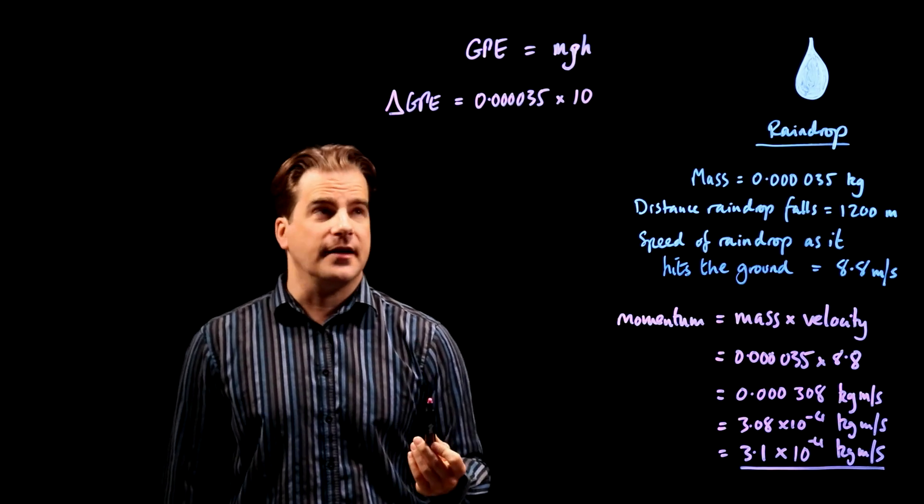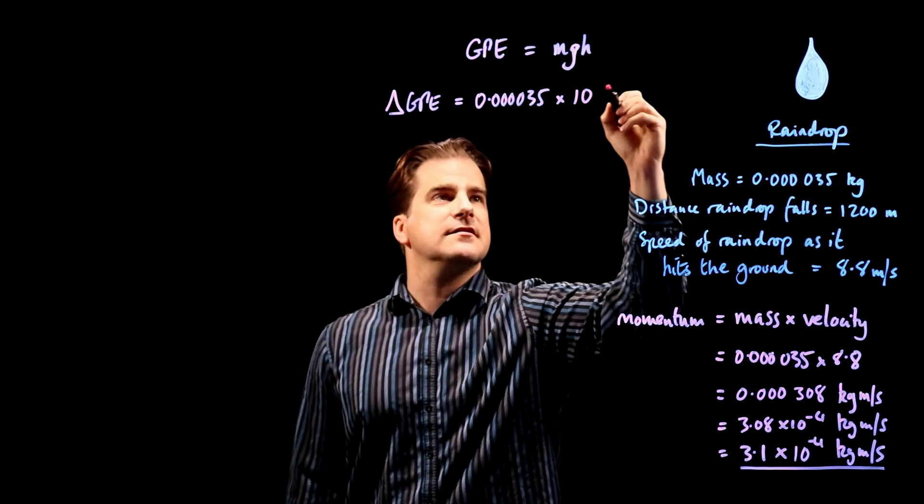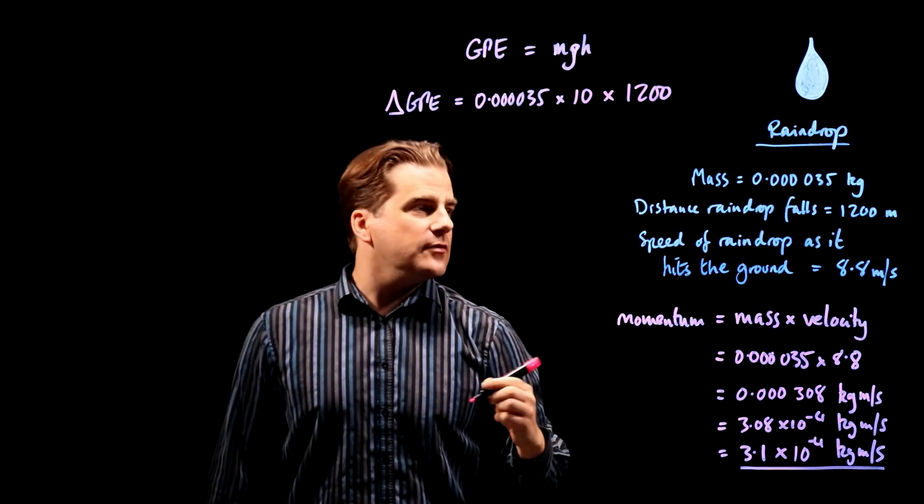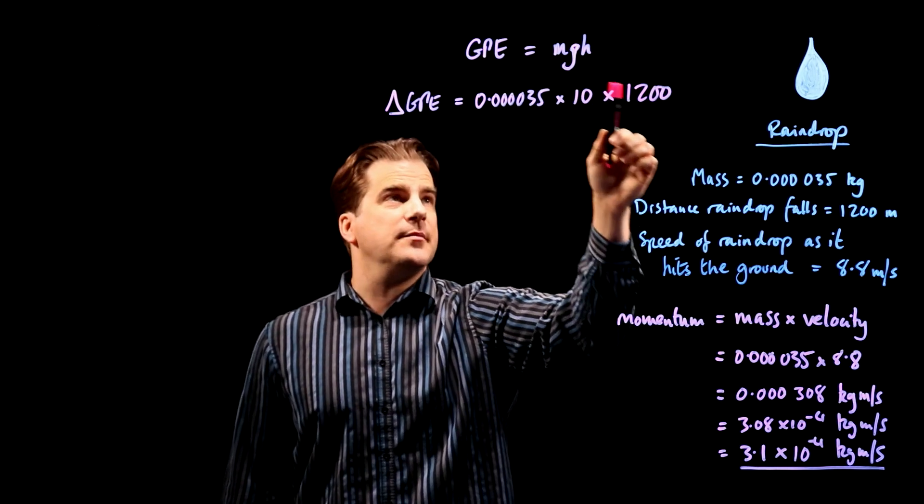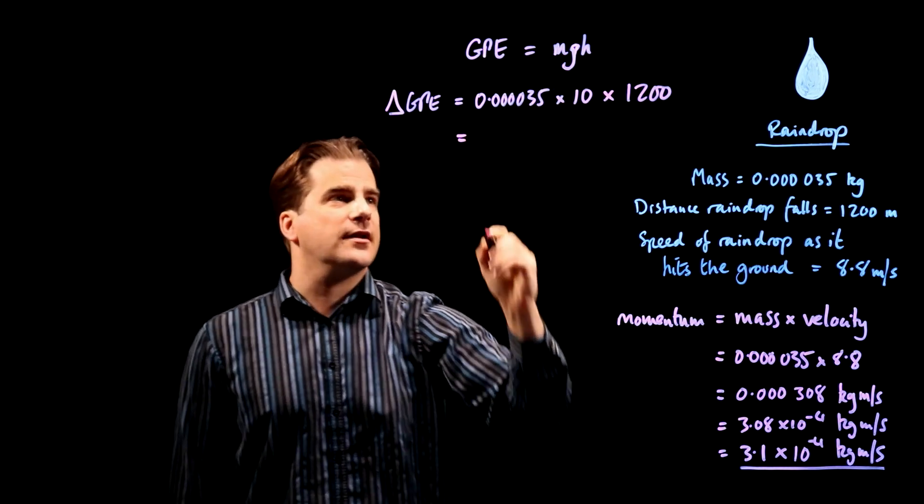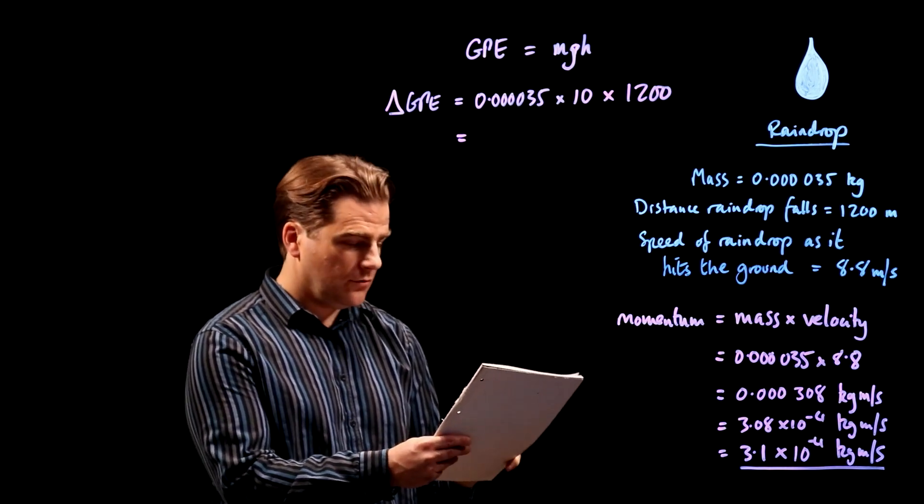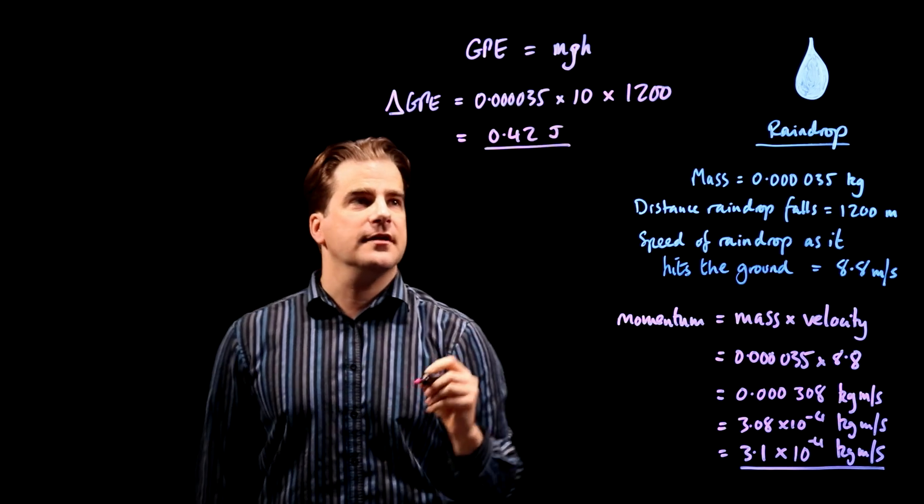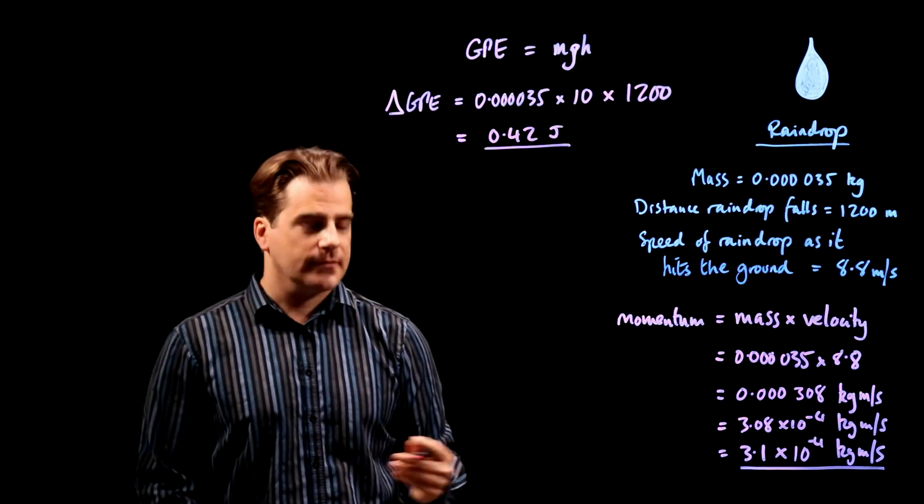Okay, so use 10. But of course, I hope you know that g, more accurately, is 9.8 meters per second squared, or even more accurately, 9.81 meters per second squared. So, g is 10 times the height, 1,200 meters, all in the correct units. You have to put things in the correct units when you put them in the equation. Height should be in meters, g should be in meters per second squared, and the mass should be in kilograms. Okay, so stick that into your calculator, and you get 0.42 joules. Don't forget the unit, and the unit is joules because it's energy, gravitational potential energy.